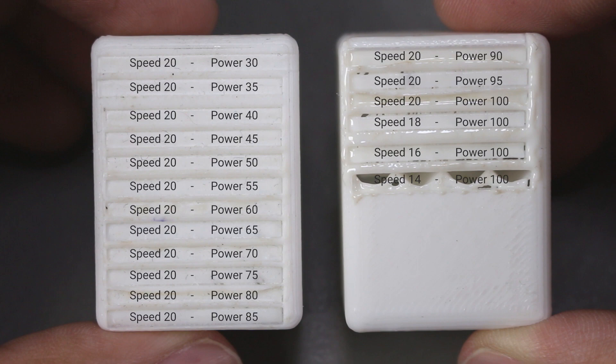We can see that by the time we got to the laser strength of 80, the PLA already started to deform around it and it wasn't really a nice rectangular shape anymore.